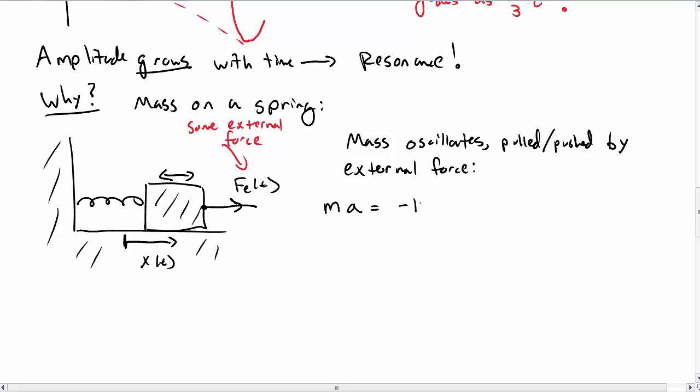When I put this together, I have ma equals the sum of all the forces minus kx plus the external force, or written as a differential equation, x double dot plus k over m times x equals 1 over m times the external force.